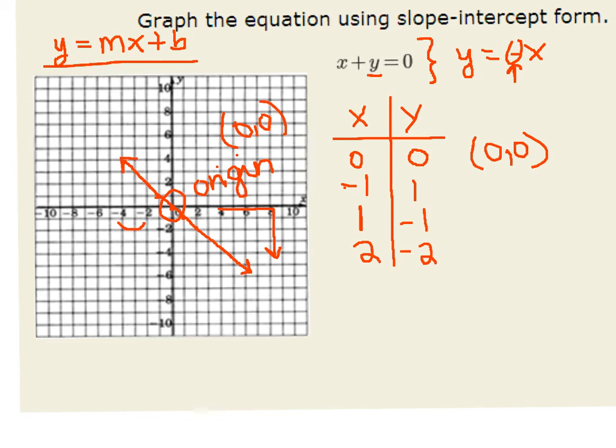And even over here, as x gets bigger when it goes from negative 4 to negative 2, y is going from 4 to 2, so it's getting smaller. So this is our graph of the equation x plus y equals 0 using slope-intercept form.